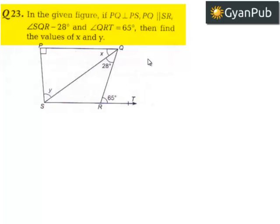Moving on to question number 23. In the given figure, if PQ is perpendicular to PS and PQ is parallel to SR, angle SQR equals 28 degrees and angle QRT equals 65 degrees, then find the values of X and Y.